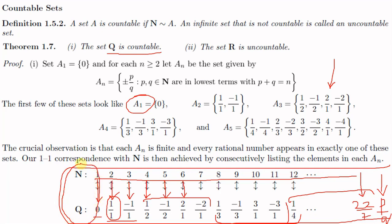Since we have shown this correspondence is both one-to-one and onto, there is a one-to-one correspondence between N and Q. This means Q is countable, completing the proof that the set Q is countable.